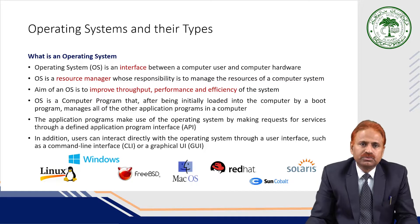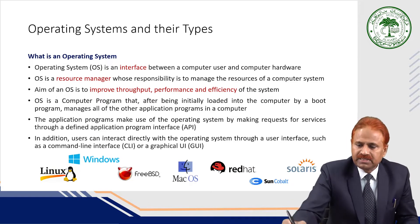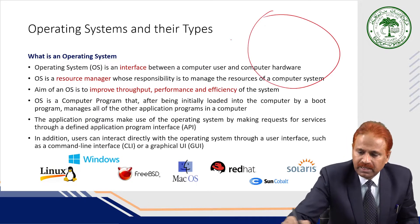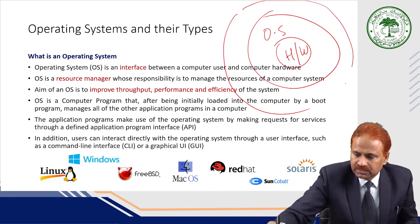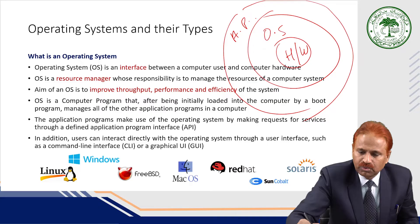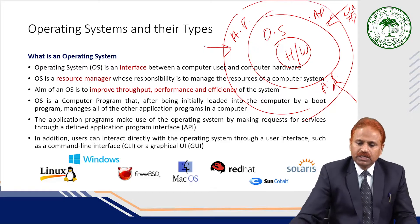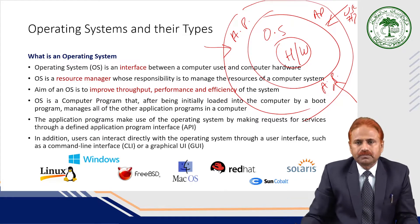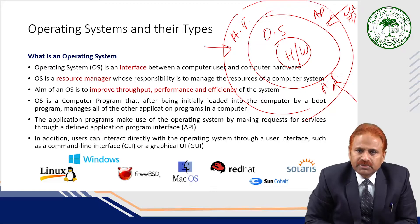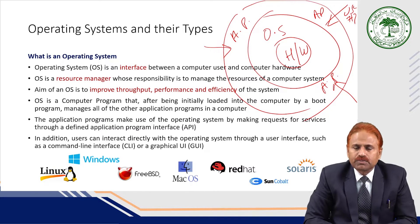Now we come to the main part which is known as an operating system. The operating system basically is an interface between the application program and the hardware. These are the hardware, then it is the operating system, and here are the application programs. Various users interact using these application programs. So the operating system is an interface between the application program and the hardware, and between the computer user and the computer hardware.